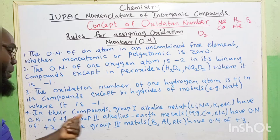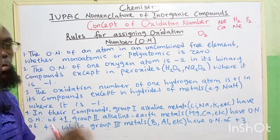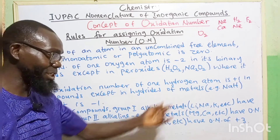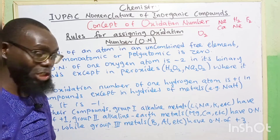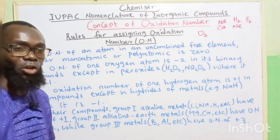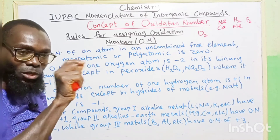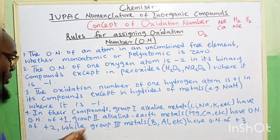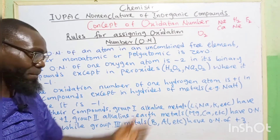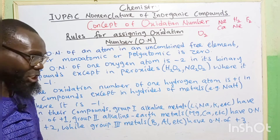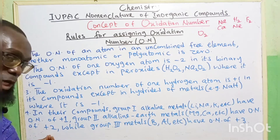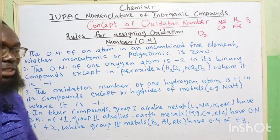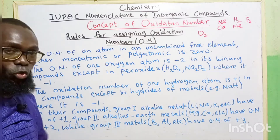The fourth rule: in their compounds, group one elements — called alkali metals — like lithium, sodium, potassium, and so on, always have the oxidation number equal to their group number, which is plus one. While group two elements, called alkaline earth metals, like magnesium, calcium, and so on, their oxidation number equals plus two. While group three metals, like boron, aluminum, etc., their oxidation number equals plus three.